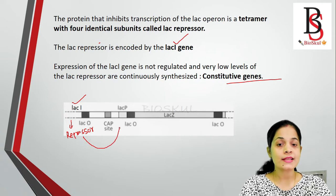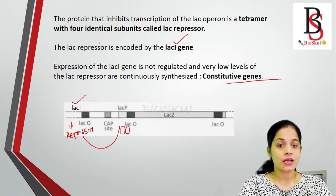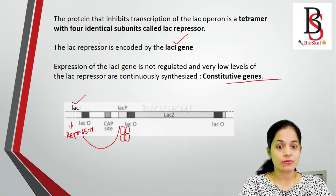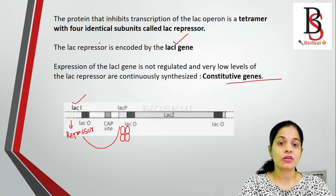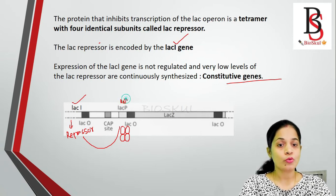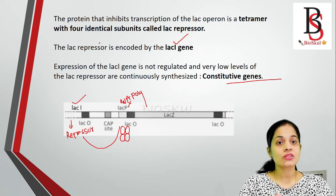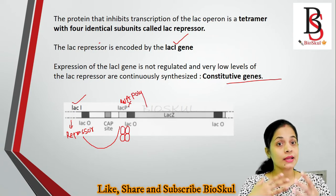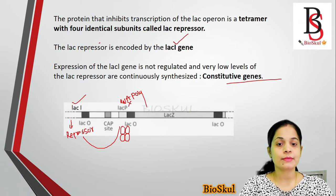The repressor binds to the operator gene as a homo tetramer. When the repressor binds the operator as a homo tetramer, RNA polymerase cannot bind to the promoter region, thereby inhibiting the transcription process.